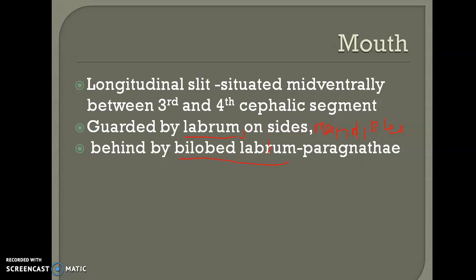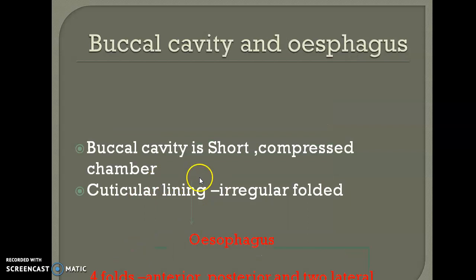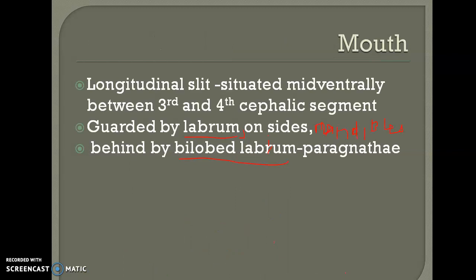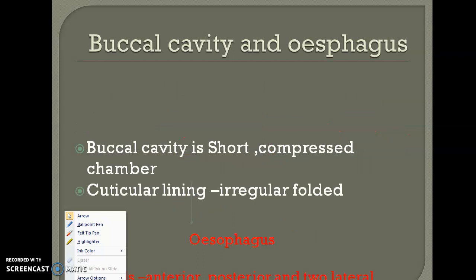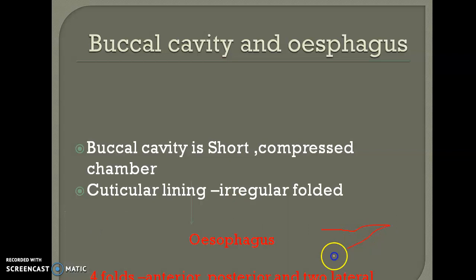Next is the buccal cavity. The mouth opens into the buccal cavity, which is a short compressed chamber with a cuticular lining that is irregularly folded. It opens into the esophagus. The esophagus has four folds: an anterior fold, a posterior fold, and two lateral folds.